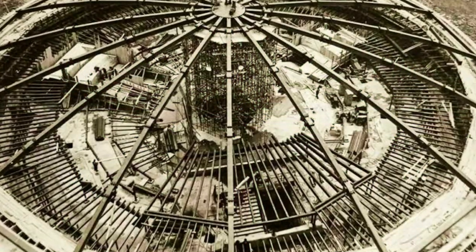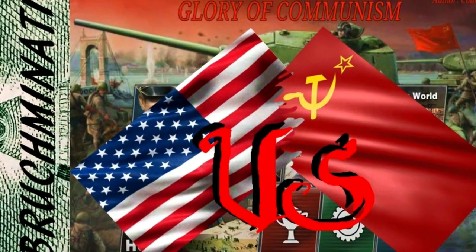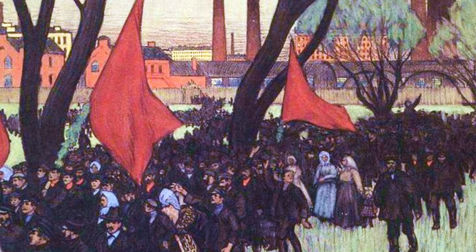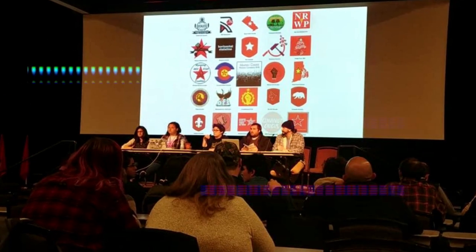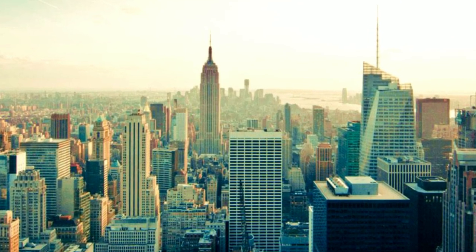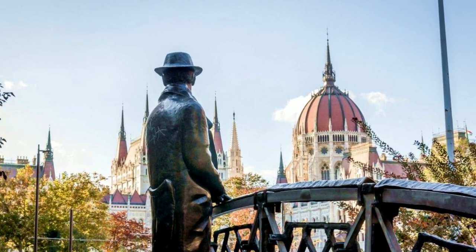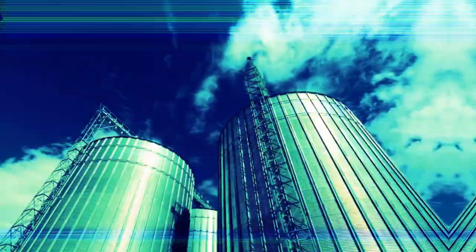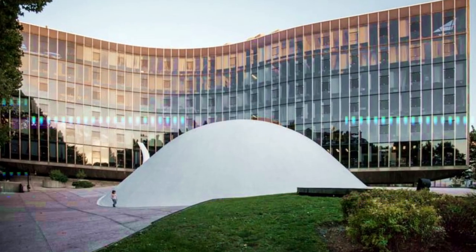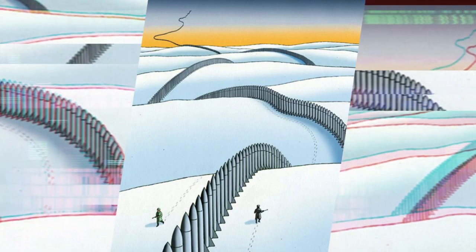Communism is defined by the following core values: 1) Equality of all. 2) Free and equal social, economic and political development. 3) Free choice of one's career. 4) Freedom of movement and political association. 5) A government that is accountable to the people, by law. Communist ideology was introduced by the German communist Karl Marx, who wrote the Communist Manifesto in 1848.